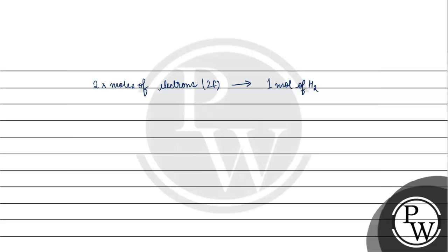that is 2 Faraday, will deposit 1 mole of hydrogen. Basically 2×96500 coulomb charge will give us 1 mole of hydrogen deposit.